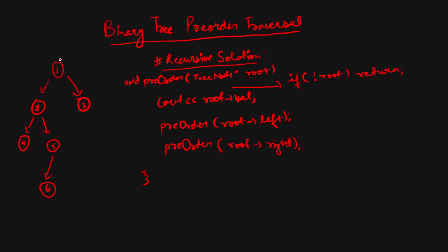First I call pre-order with root node 1. It checks: is it null? No. So it prints root value 1 into our result. Then it calls left, which is not null, so it prints 2. Then it calls left again — node 4. It prints 4, then checks left: null, so it returns. Then checks right: also null, so it returns. P4 is done and removed from the call stack.